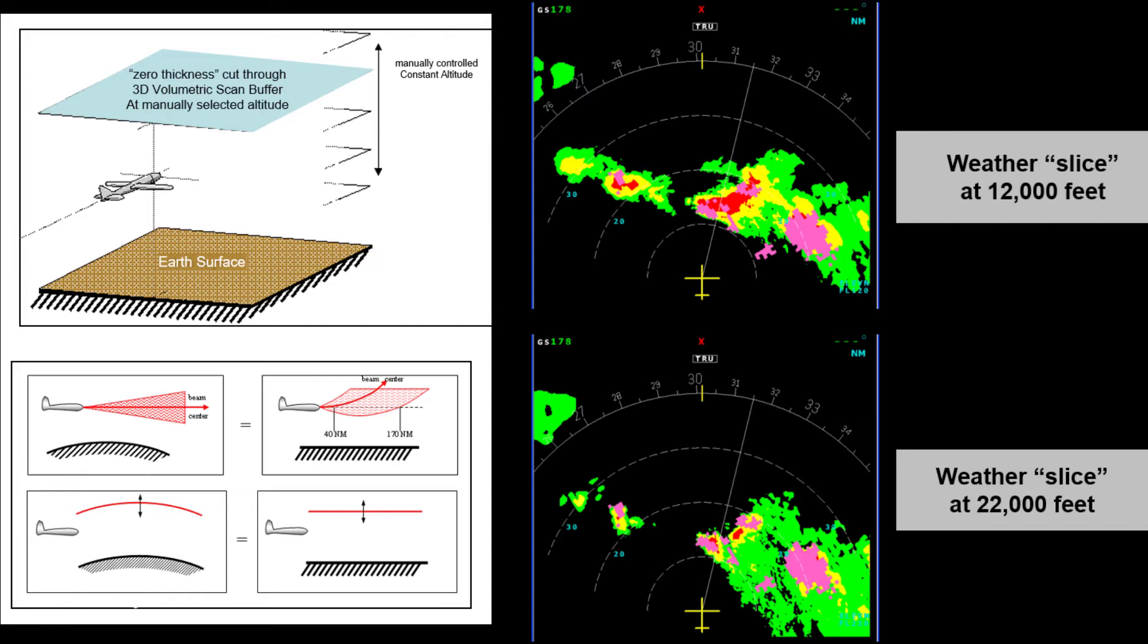These pictures show a very quick and simple analysis. Here, we have the same storm cell with slices extracted at 12,000 feet and 22,000 feet, providing a clear deviation path.